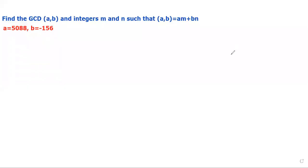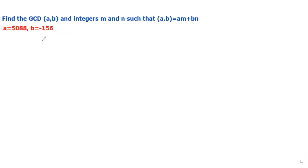Hello and welcome to this tutorial on the Euclidean algorithm. Today we are going to find the greatest common divisor of two integers. Here we are dealing with a negative number example, where b is equal to negative 156. This is one that is typically a little bit more involved since we have a negative. I'm going to show you the way that my professor taught it to me and then how I do it. I'm moving a little quickly, assuming most of you in abstract algebra have already had discrete and this process is a little bit familiar.